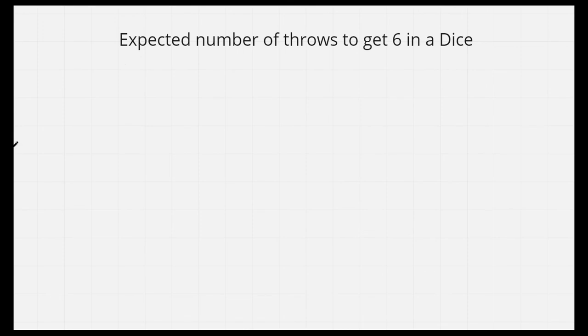The question that we are going to discuss today is, find the expected number of throws to get 6 in a dice. I will be telling you a very simple solution which is very easy to understand. If you would like to give this problem a try then pause the video, else continue watching for the solution.